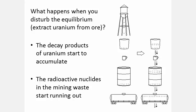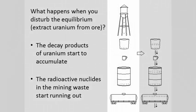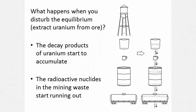What happens when you chemically extract uranium from its ore? That's like moving aside the whole string of full containers, which represents the mining waste, and placing a new set of empty containers below the city water tank, which represents the separated uranium. As time goes by, the extracted uranium starts filling the empty bucket, which then starts filling up the tin cup, and so on.